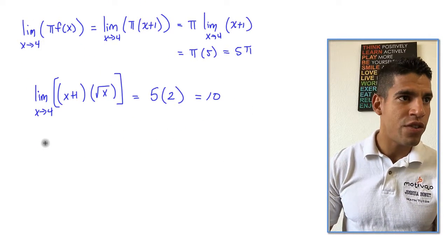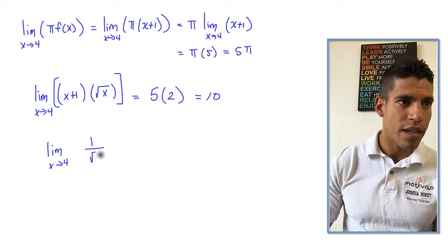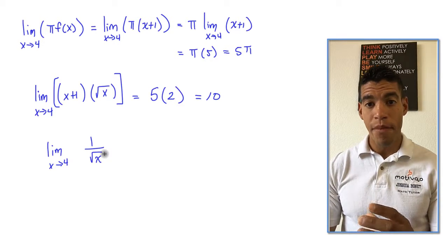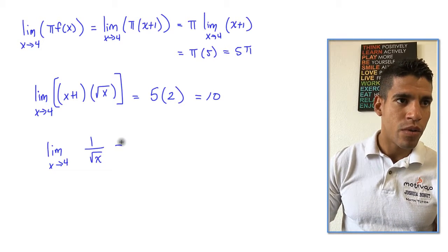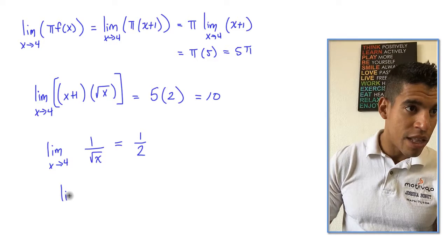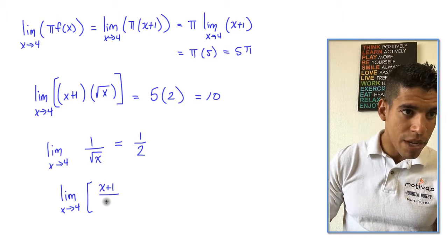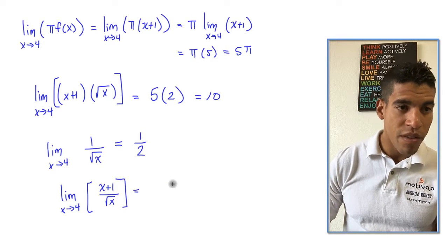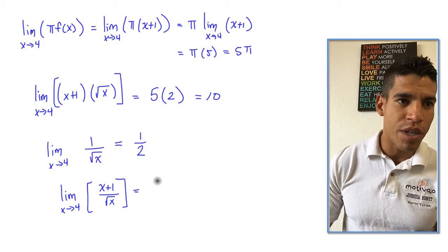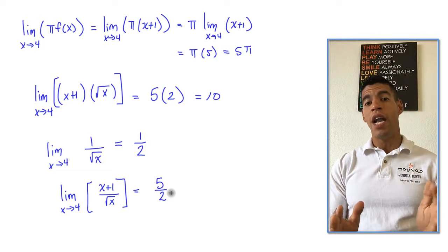Division: the limit as x approaches 4 of 1 over √x. Notice M = 2, which is not 0, so this equals 1 over 2. Then for f(x) divided by g(x): the limit of (x + 1) divided by √x equals the limit of the numerator divided by the limit of the denominator, which is 5 over 2.